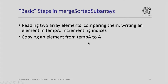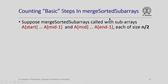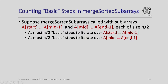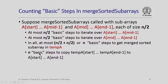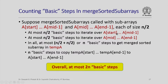Now let us count the basic steps required by merge sorted subarrays. Each basic step involves reading array elements, comparing them, writing one to temp_a, and incrementing indices. Copying an element from temp_a back to a is also counted. With two sorted subarrays each of size n/2, at most n/2 basic steps are needed to iterate over each, giving at most n steps to produce the merged result in temp_a, plus n more steps to copy temp_a back to a. So overall, at most 2n basic steps are required.